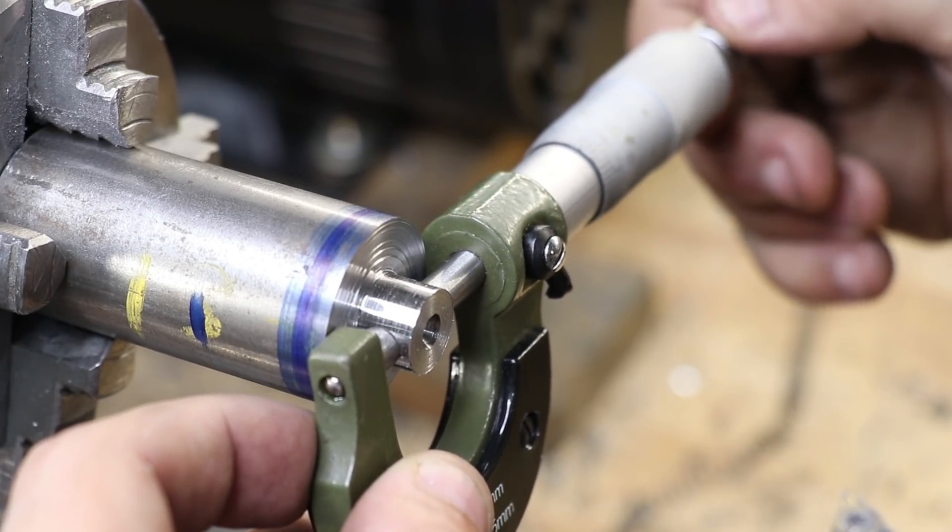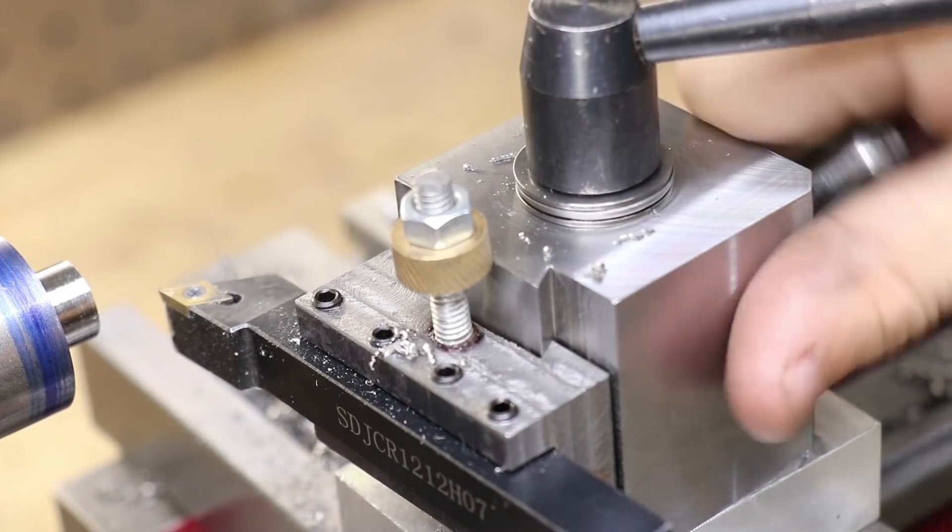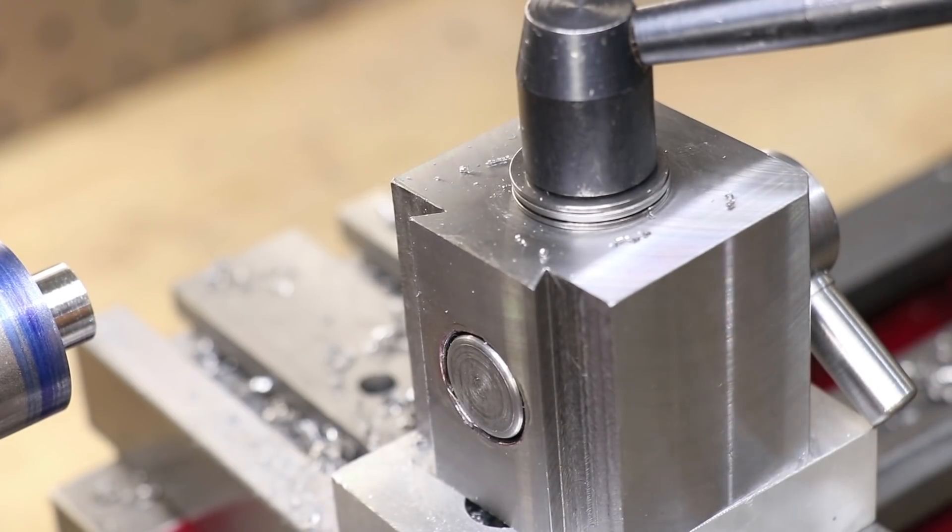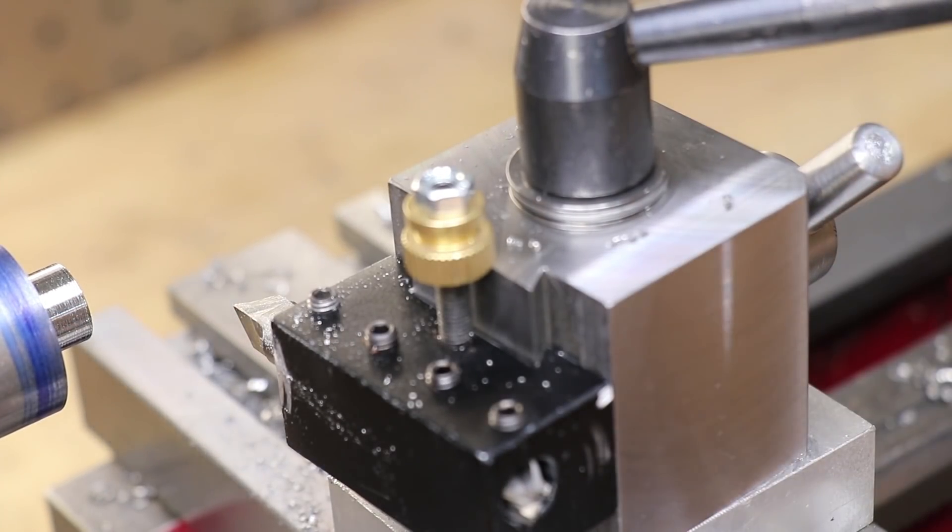According to the micrometer I'm about 25 microns over the desired diameter. The carbide isn't sharp enough to take such a light cut so I'll swap over to a really sharp piece of high-speed steel that I've ground.